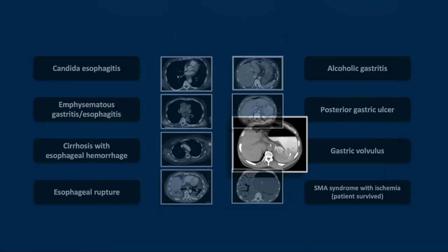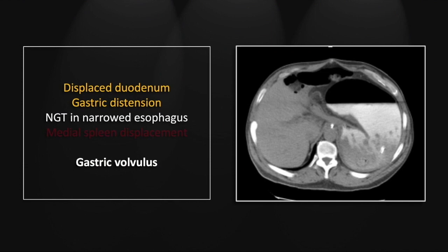Our next case is a gastric volvulus. This is a tough one, but that is the duodenum — the first and second portions of the duodenum dragged out of place by the displaced gastric antrum, which is flipped upwards and posterior to its normal position. Note the marked distention of the stomach, suggesting there is a serious element of outflow obstruction.